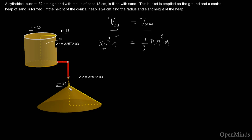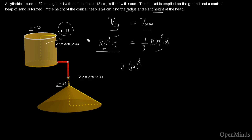The cone's height is 24. I don't know what r is — that's what I need to find. I don't have the slant height in this formula, but I can still find r because I have everything else. Setting volume of cylinder equal to volume of cone, I substitute: π × 18² × 32 = (1/3) × π × r² × 24.